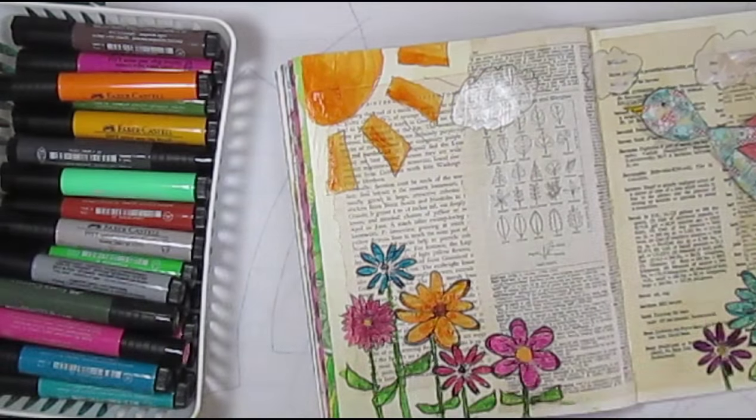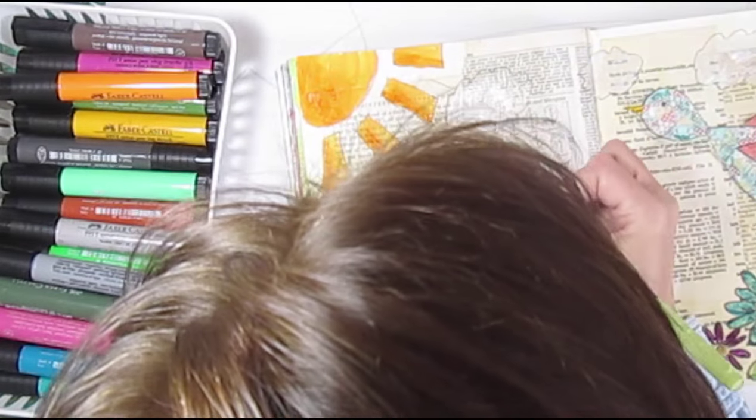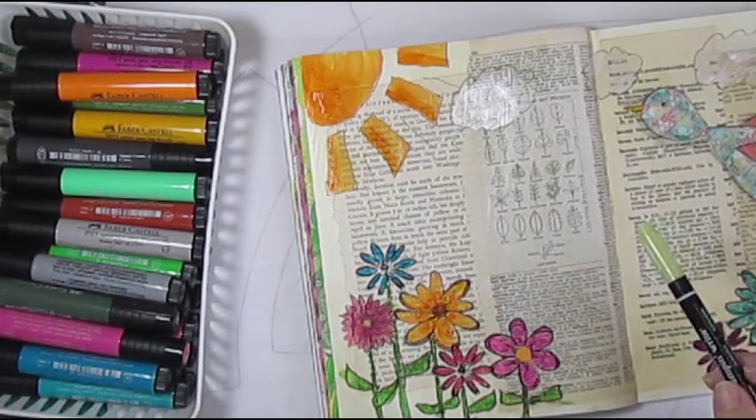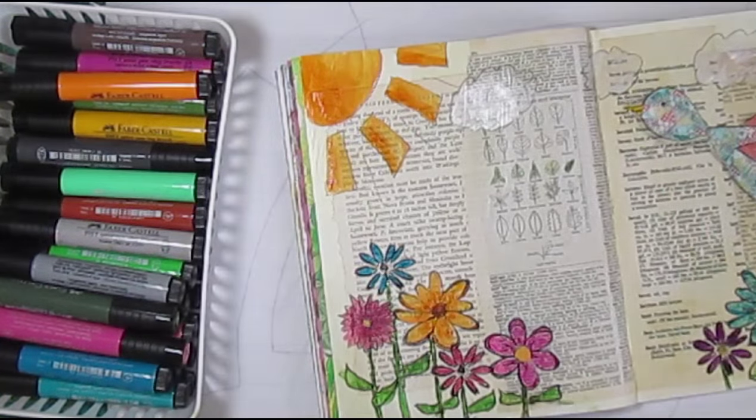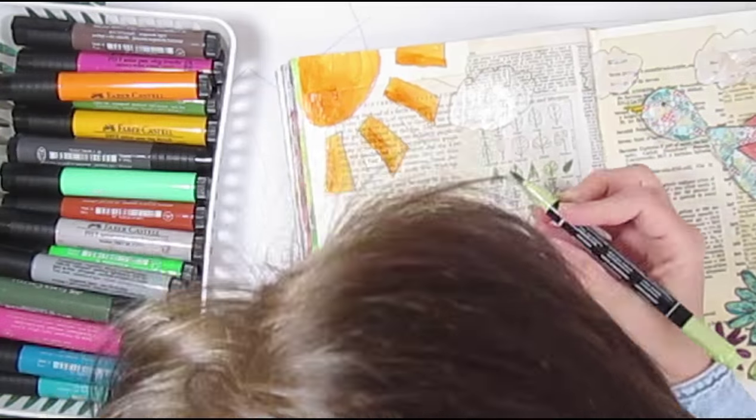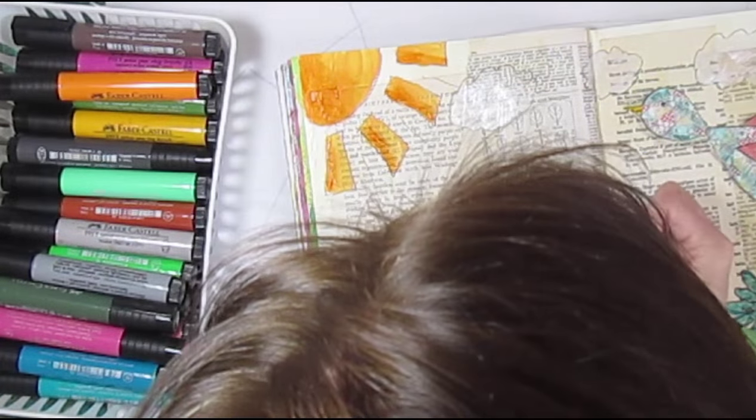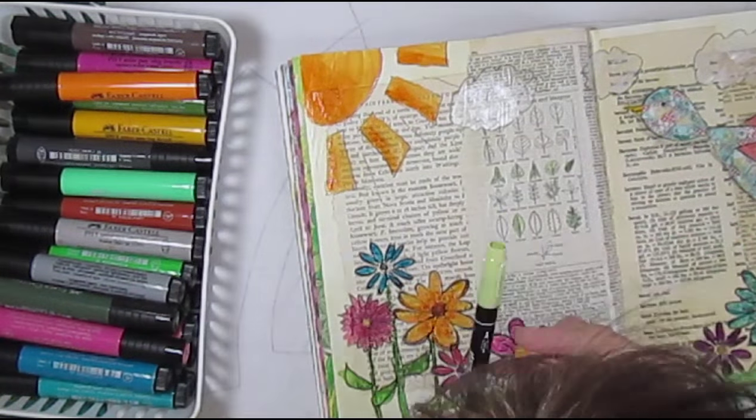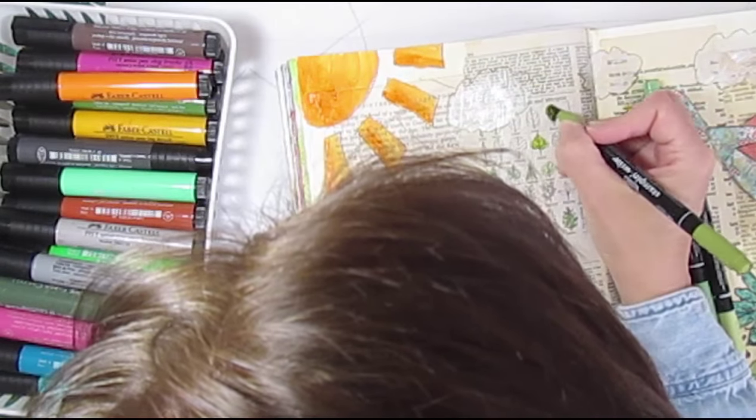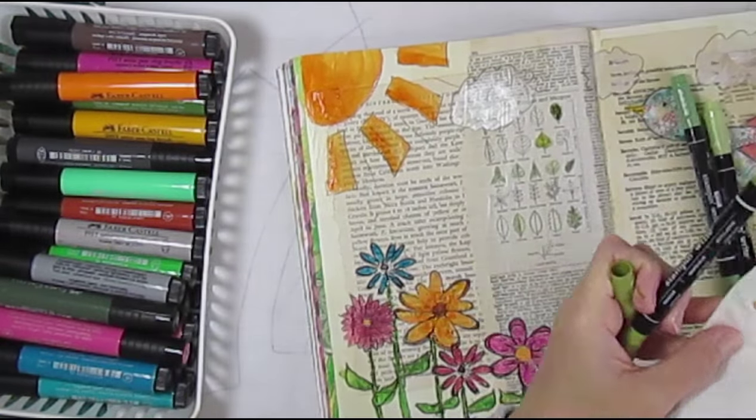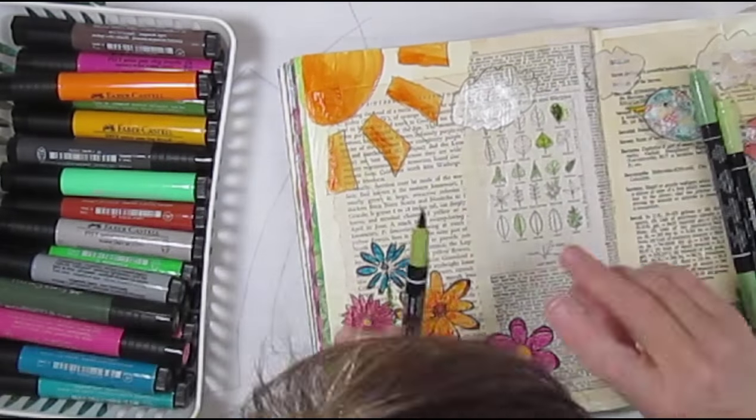But these markers will move. You can use your fingers and smudge them a little bit because of the Mod Podge base. And I am coloring in a few of those leaves just in greens. And I really liked it. I didn't color all of them. I just colored a few of them. It just adds a little more dimension to the background of my design.